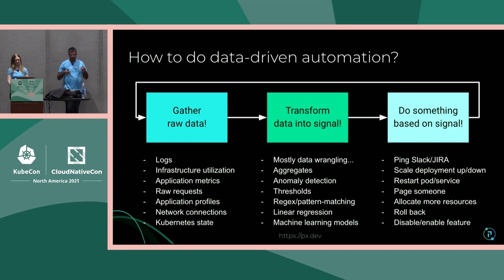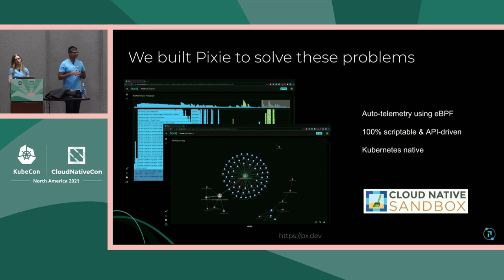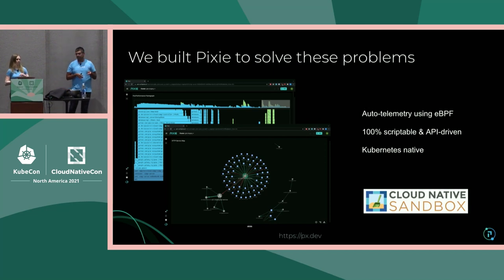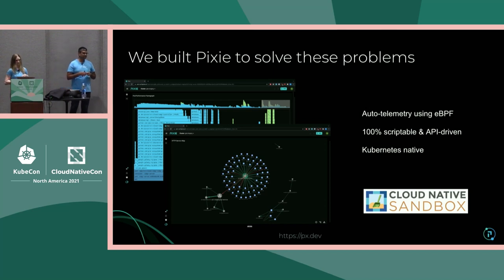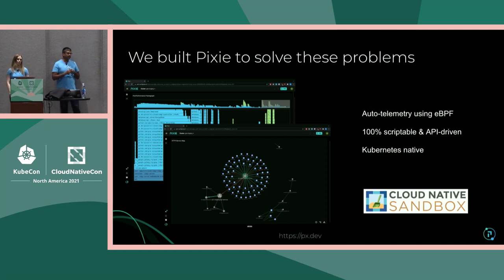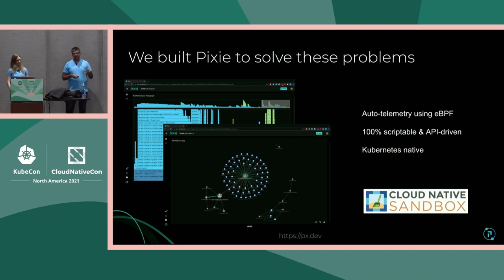When we started to build Pixie, our goal was to build a data system that we could deploy on clusters to understand what's going on and then automate workflows. Pixie was built to solve these problems. We have three core principles. The first is to do as much automated telemetry as possible, utilizing a relatively new kernel technology called eBPF, which allows you to dynamically insert code into the kernel to observe applications. The second is to make everything scriptable and API-driven. The third is to have a Kubernetes-native system so we can understand entities and work with them.